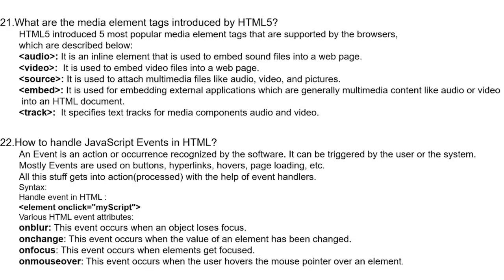Question 21: What are the media element tags introduced by HTML5? HTML5 introduced five popular media element tags supported by browsers: the audio tag (an inline element used to embed sound files into a web page); the video tag (used to embed video files into a web page); the source tag (used to attach multimedia files like audio, video, and pictures); the embed tag (used for embedding external applications, generally multimedia content like audio or video, into an HTML document); and the track tag (specifies text tracks for media components audio and video).